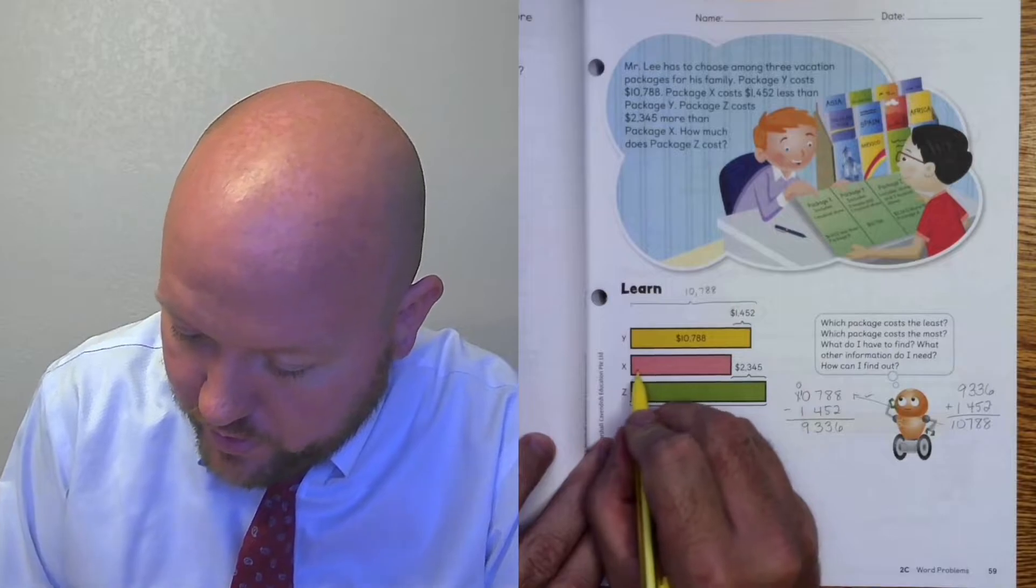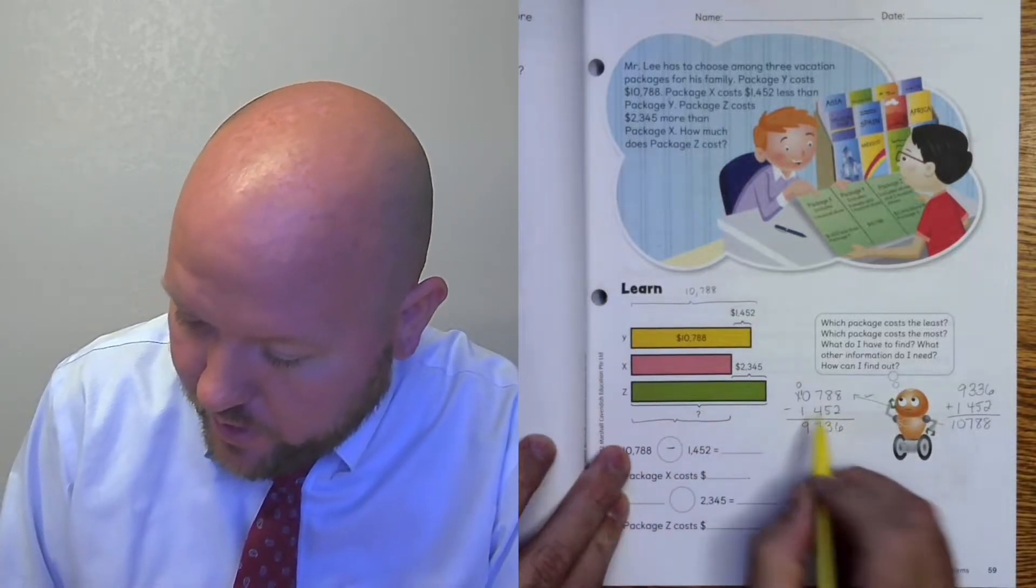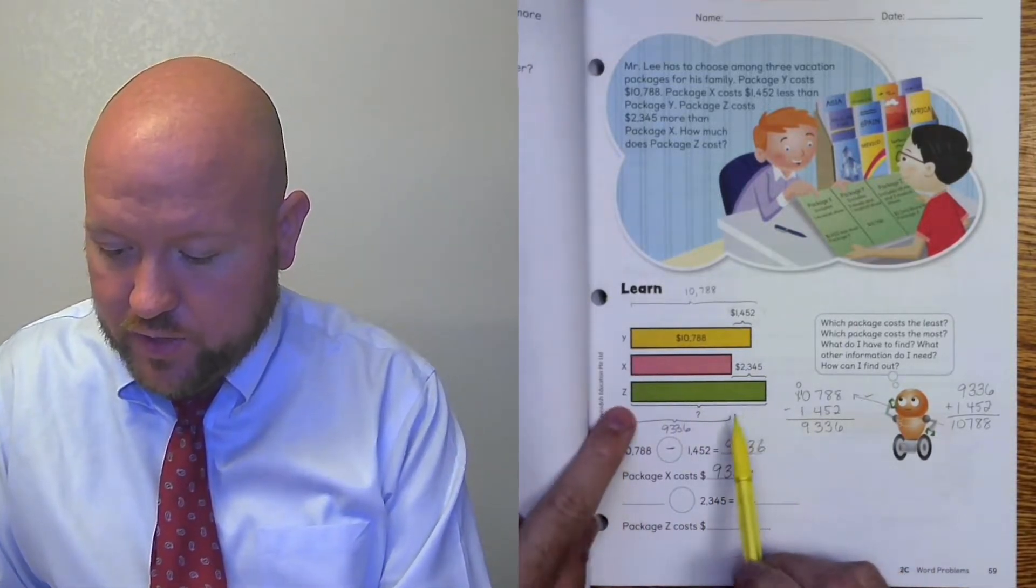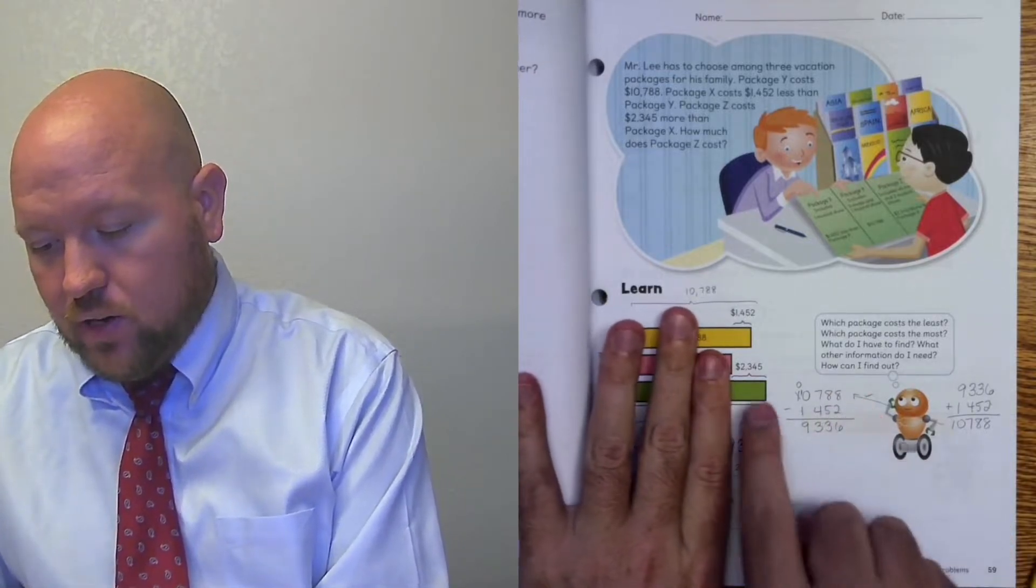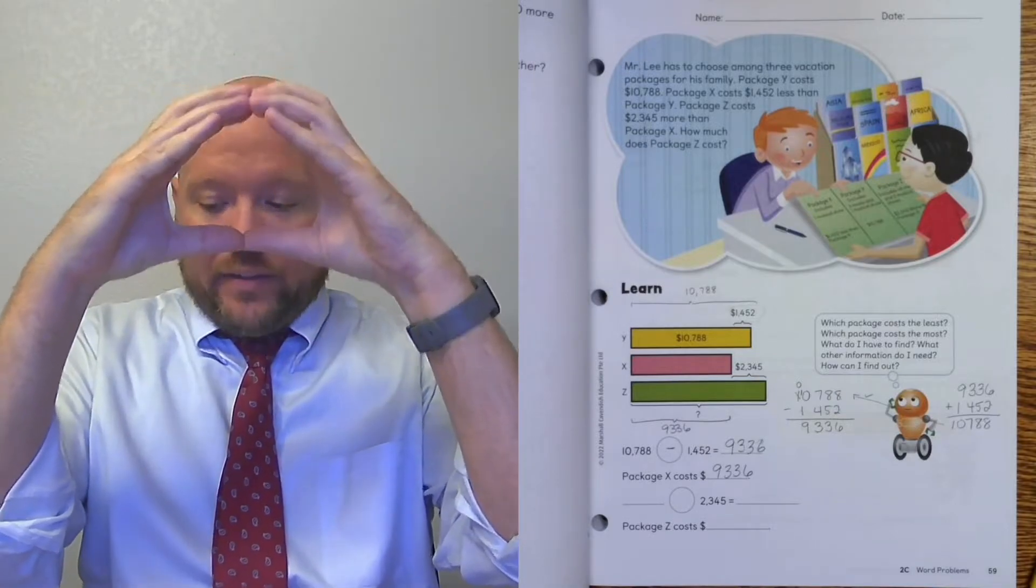So now I know that X, they didn't really give me a lot of space to write this. So I'm going to just model it down here like this. X equals 9,336. So now, just the way I've modeled this, we can see on this model right here, this part is 9,336 and this part is 2,345. So now we have two parts. How do we find the total of two parts? Or how do we find a whole? We put them together. We add them, right?